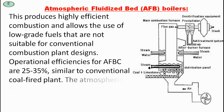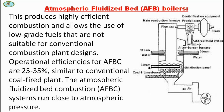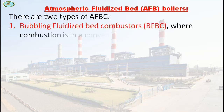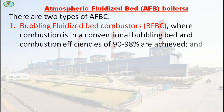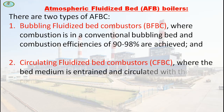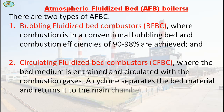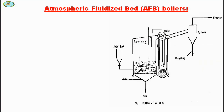Similar to conventional coal-fired plants, atmospheric fluidized bed combustion systems run close to atmospheric pressure. There are two types of AFBC boiler. The first is bubbling fluidized bed combustion, BFBC, where combustion is in a conventional bubbling bed and combustion efficiencies of 90 to 98% are achieved. The second is circulating fluidized bed combustion, CFBC, where the bed medium is entrained and circulated with the combustion gases. A cyclone separates the bed material and returns it to the main chamber. CFBC can achieve combustion efficiency greater than 98%.